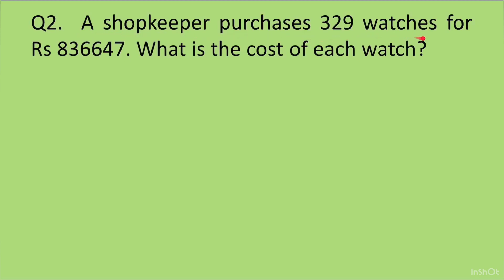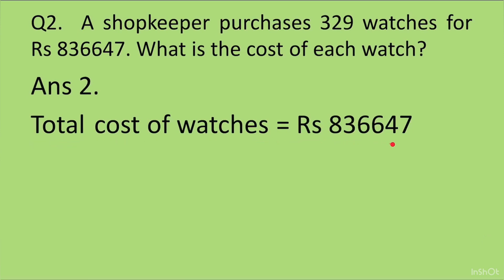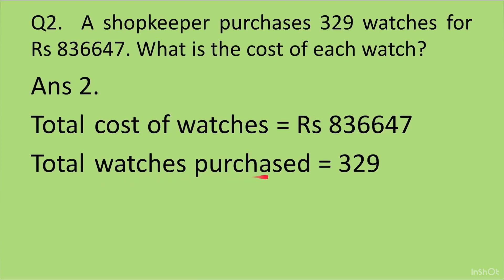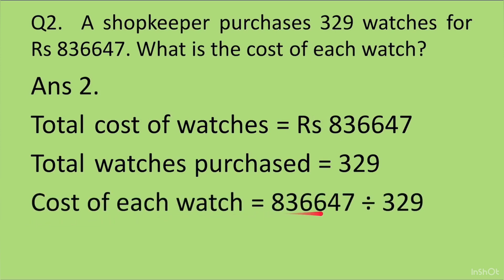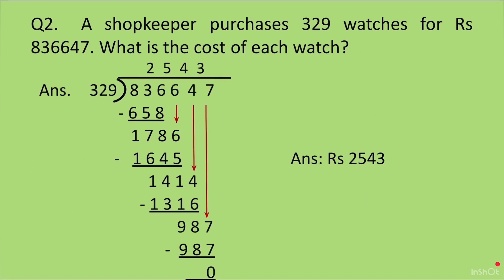Question 2: A shopkeeper purchases 329 watches for Rs. 836647. What is the cost of each watch? Total cost of watches is equal to Rs. 836647. Total watches purchased is equal to 329. We have to find the cost of one watch. Cost of each watch is equal to 836647 divided by 329. When you divide, you get the answer as Rs. 2543. Students, remember to write the units — here it is rupees.